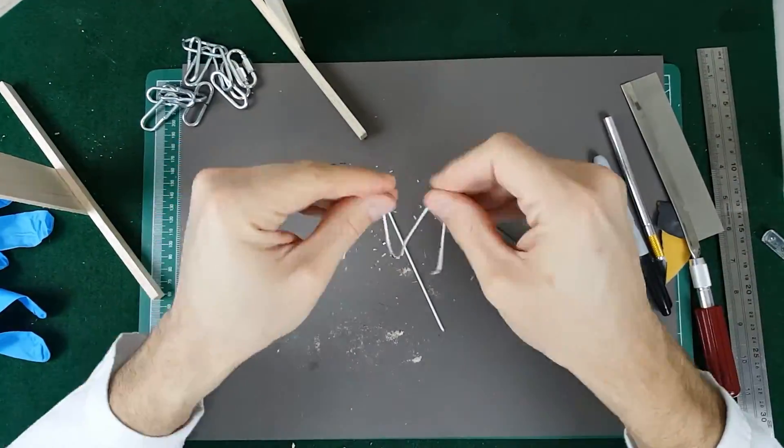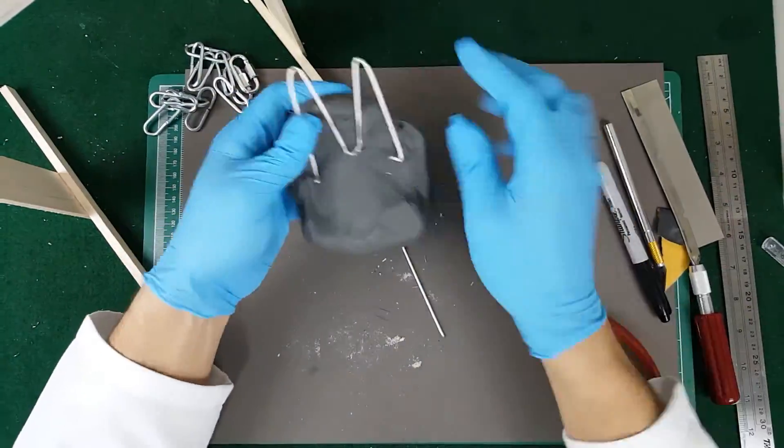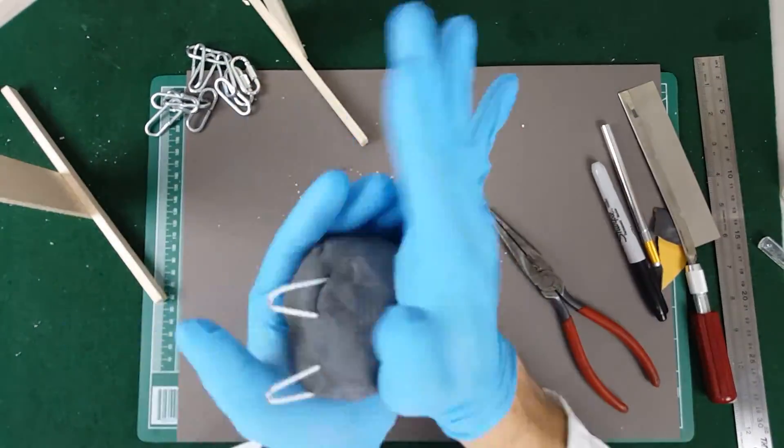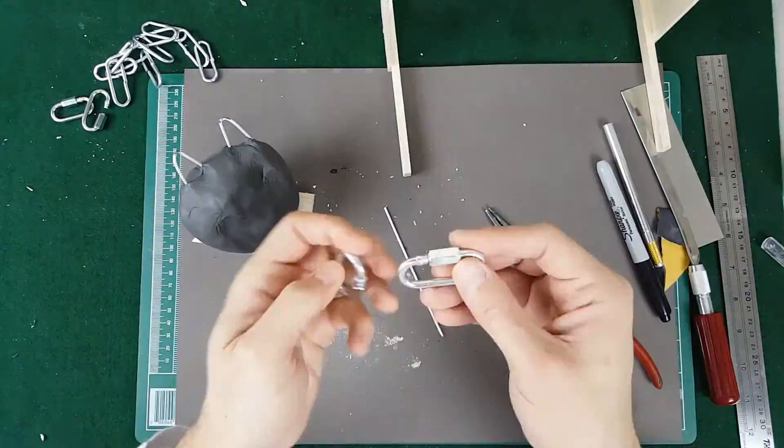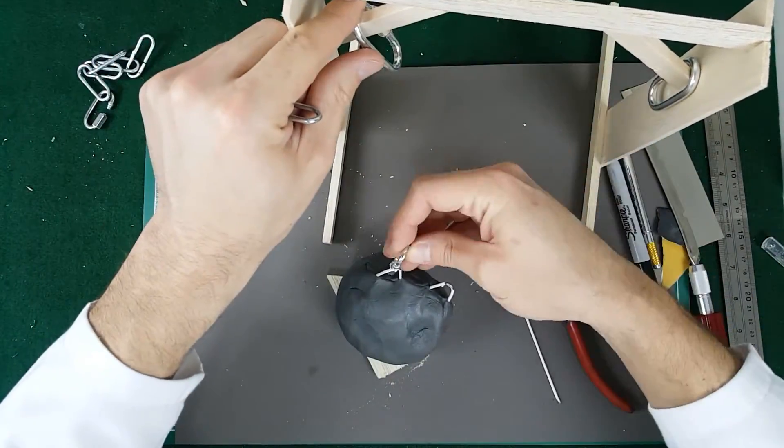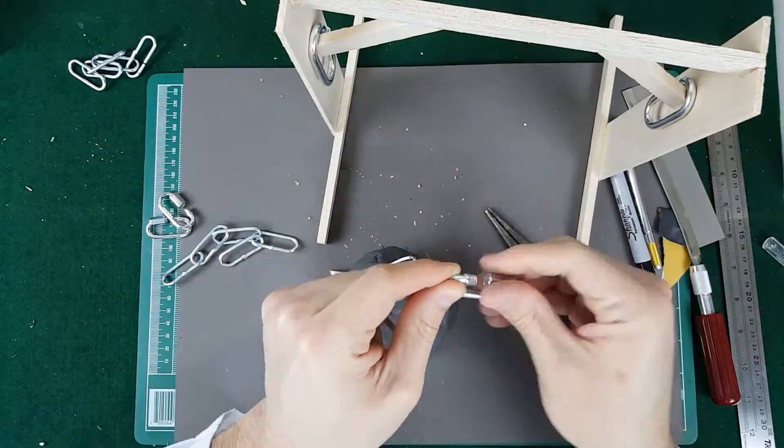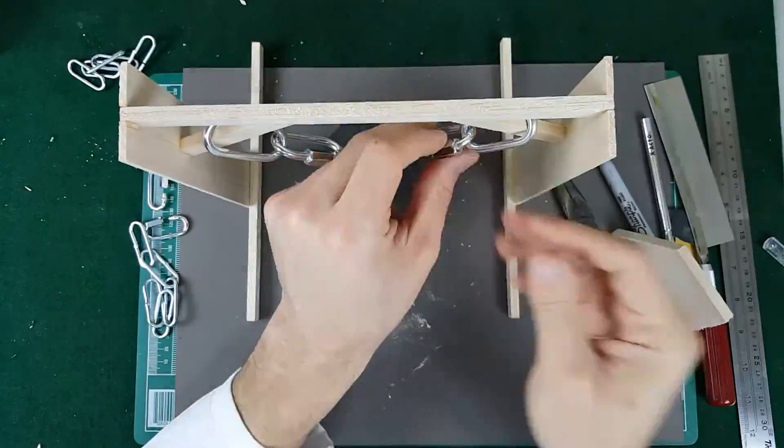For the sticky gong itself, we are using a pound of duct seal. This stuff is very dense and sticky and should catch pellets within an inch or so while showing a transfer of momentum. Now we simply hook the gong to the holder using four quick links, and now we're ready to catch some pellets.